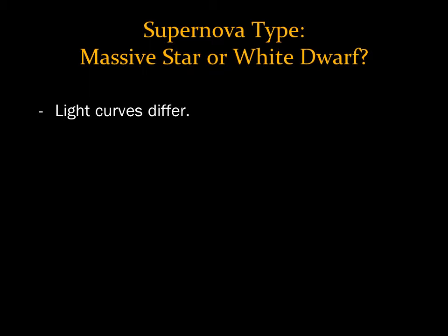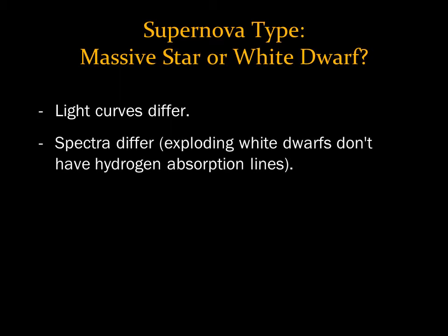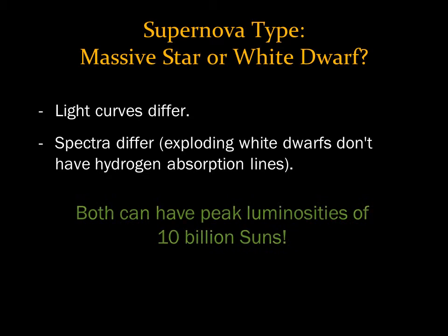The spectra are also different. A white dwarf doesn't have hydrogen, so you won't see any hydrogen absorption lines in a white dwarf supernova spectrum.